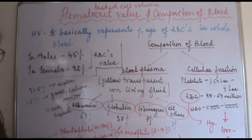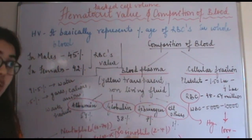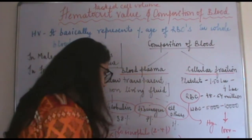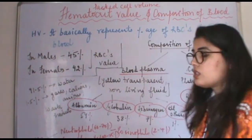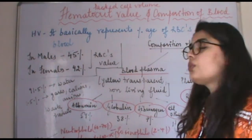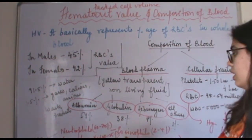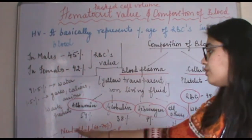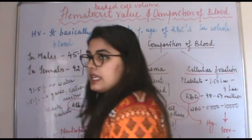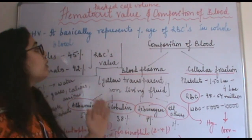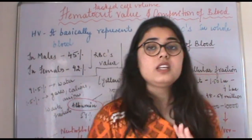RBCs are only of one type in humans, but WBCs have a variety of types with different functions. Neutrophils form 60–70% of WBCs, lymphocytes 20–25%, monocytes 3–8%, eosinophils 2–4%, and basophils 0.5–1%. Lymphocytes are further divided into B cells, T cells, and NK cells (natural killer cells), which will be studied in coming videos.